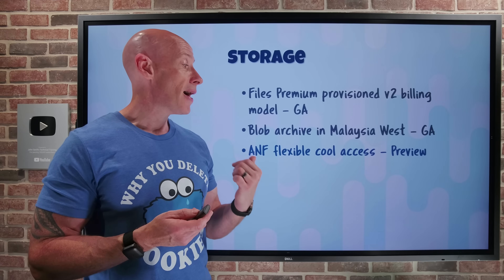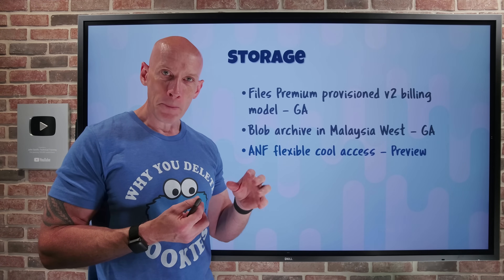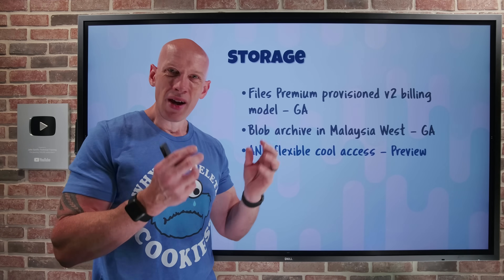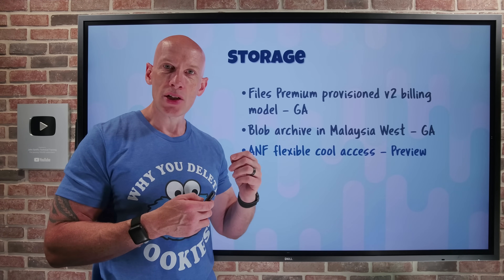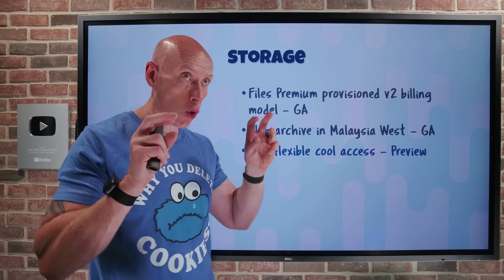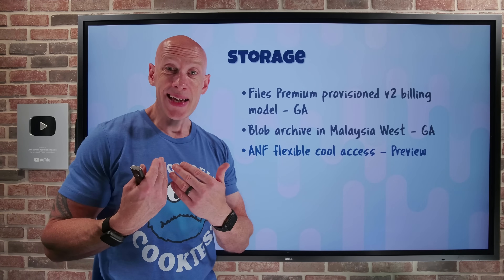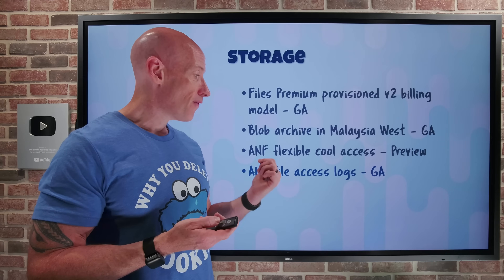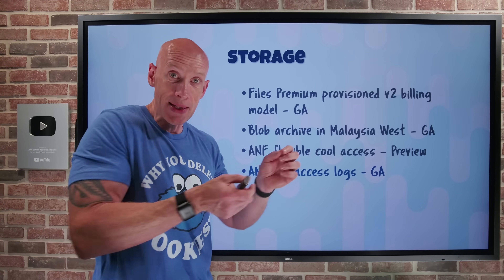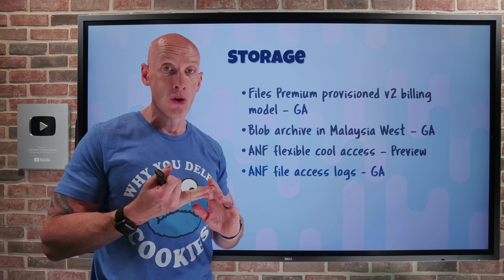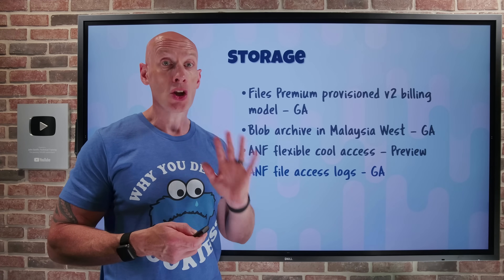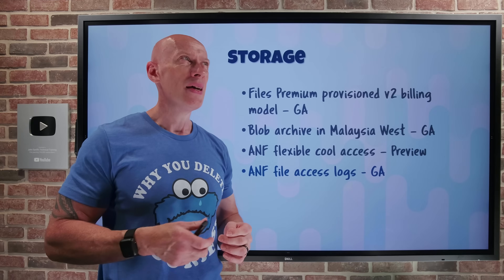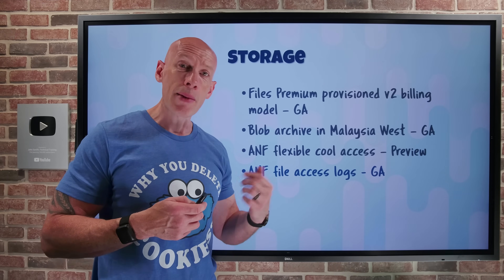Azure NetApp Files Flexible now has cool access in preview. Flexible lets you separately configure capacity and throughput to exactly match requirements. Now you can also have a cool tier for less-accessed data — what it actually does is move that data to Azure Storage, which is a cheaper cost. So the cool tier moves your least-accessed data out of Azure NetApp Files and puts it in an Azure Storage account. Also, Azure NetApp Files file access logs have gone GA. This is detailed telemetry for file access activities — for SMB volumes, NFS v4.1, and dual protocol volumes (not NFS v3). It gives information like the identity of the entity doing the operation, the operation type, and the timestamp. Each entry is about one kilobyte in size and you can enable this on a per-volume basis.